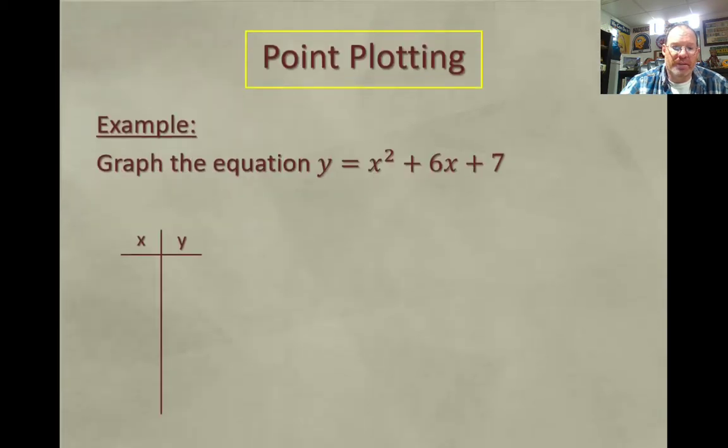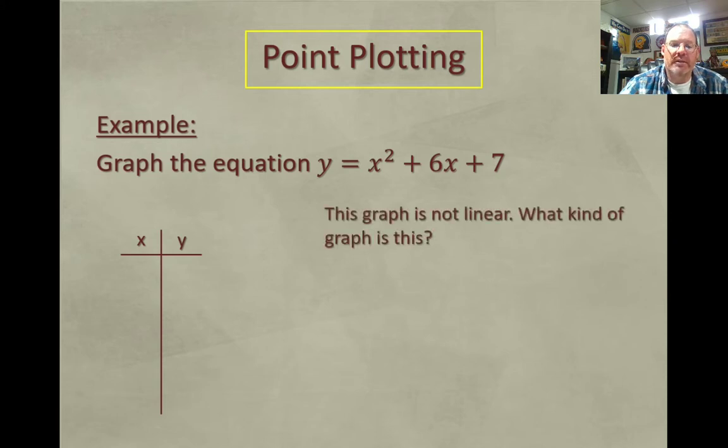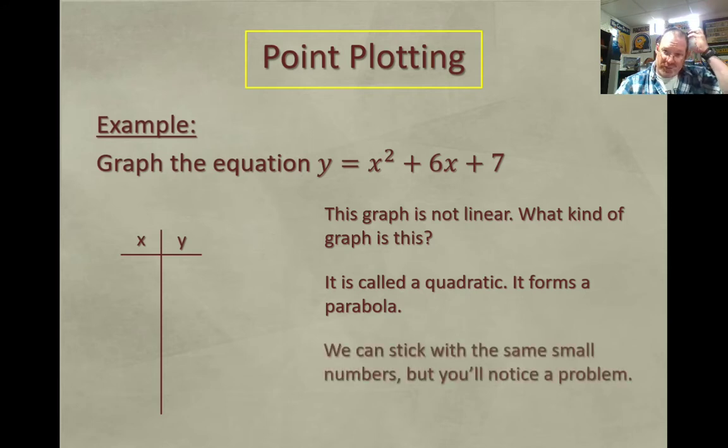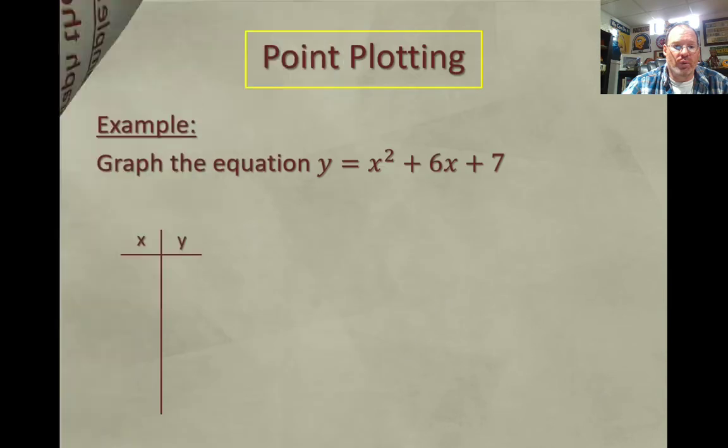Okay, now let's try the next one. This one is curved. This is not linear. I'm curious if any of you guys know how to describe this type of graph. The function is quadratic and the shape of the graph is called a parabola. Now, we're going to start with the same small numbers that we used before, but you can run into a problem there, and you'll understand why in just a second. So I'm going to go with negative 2, negative 1, and so on.